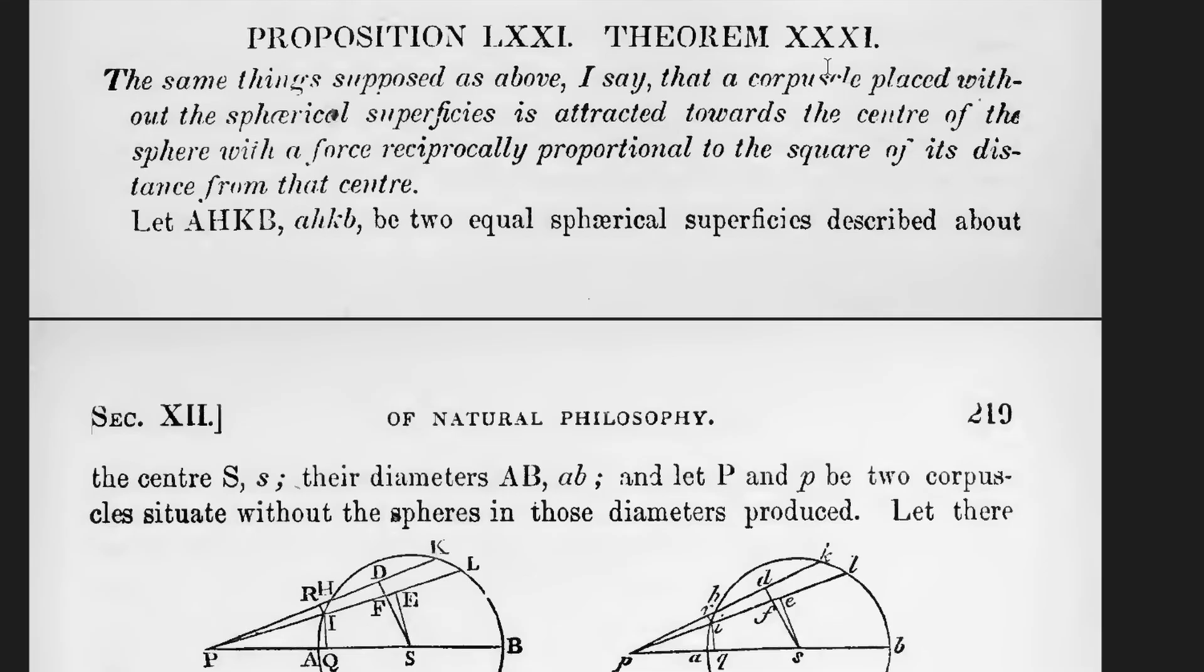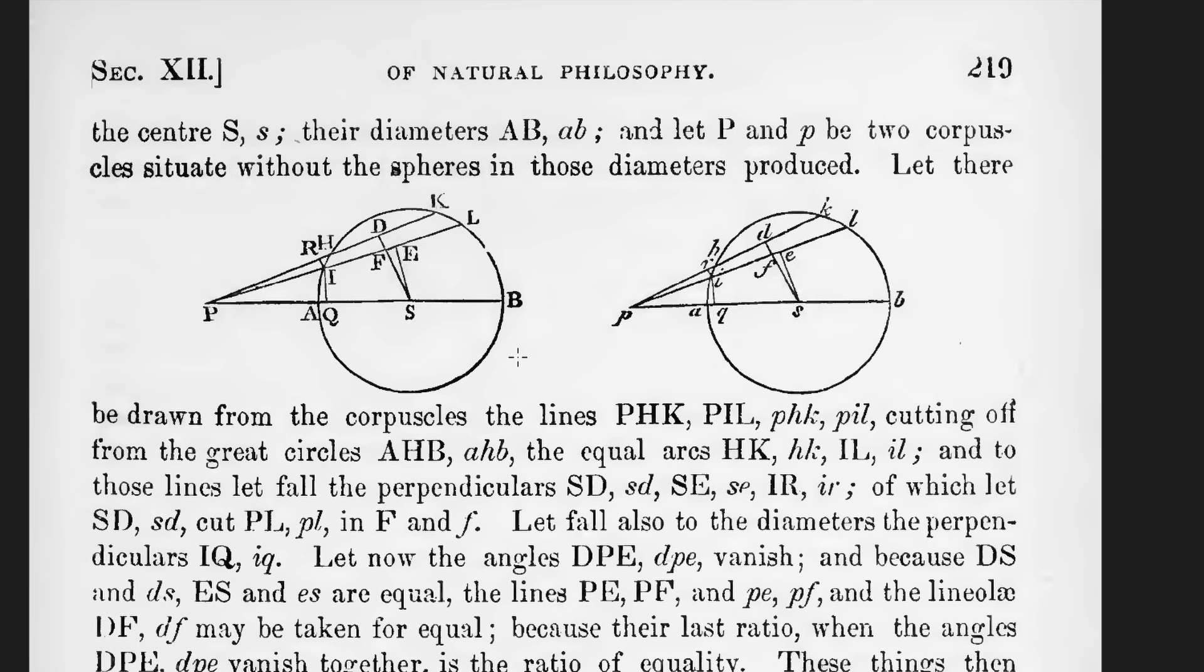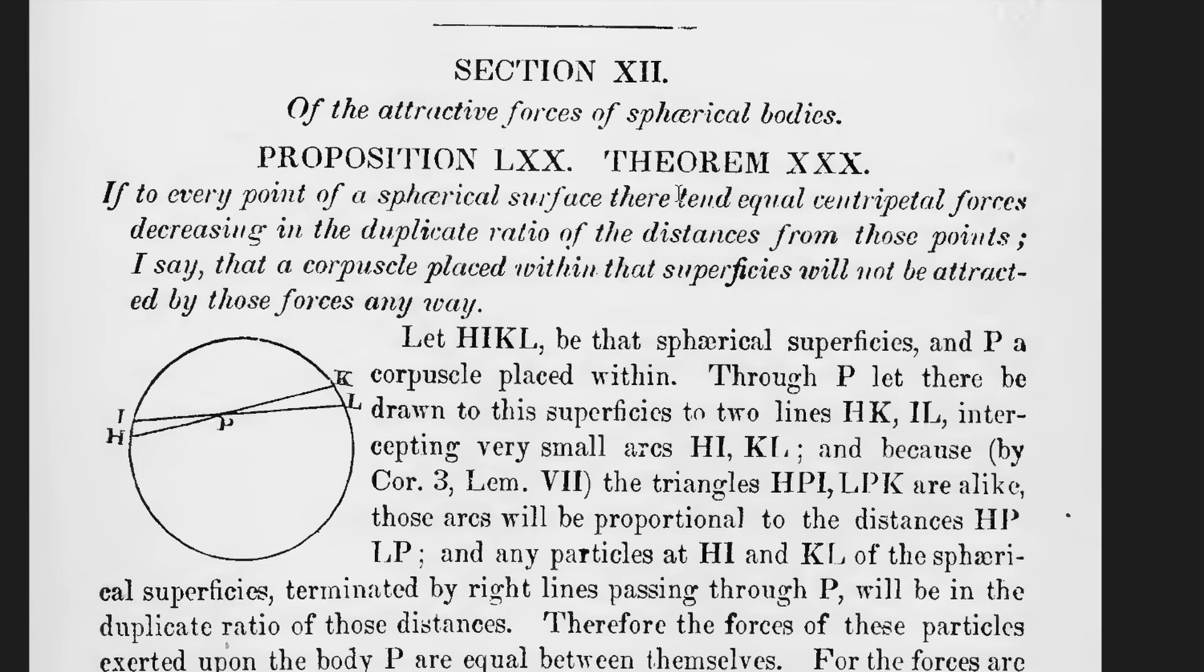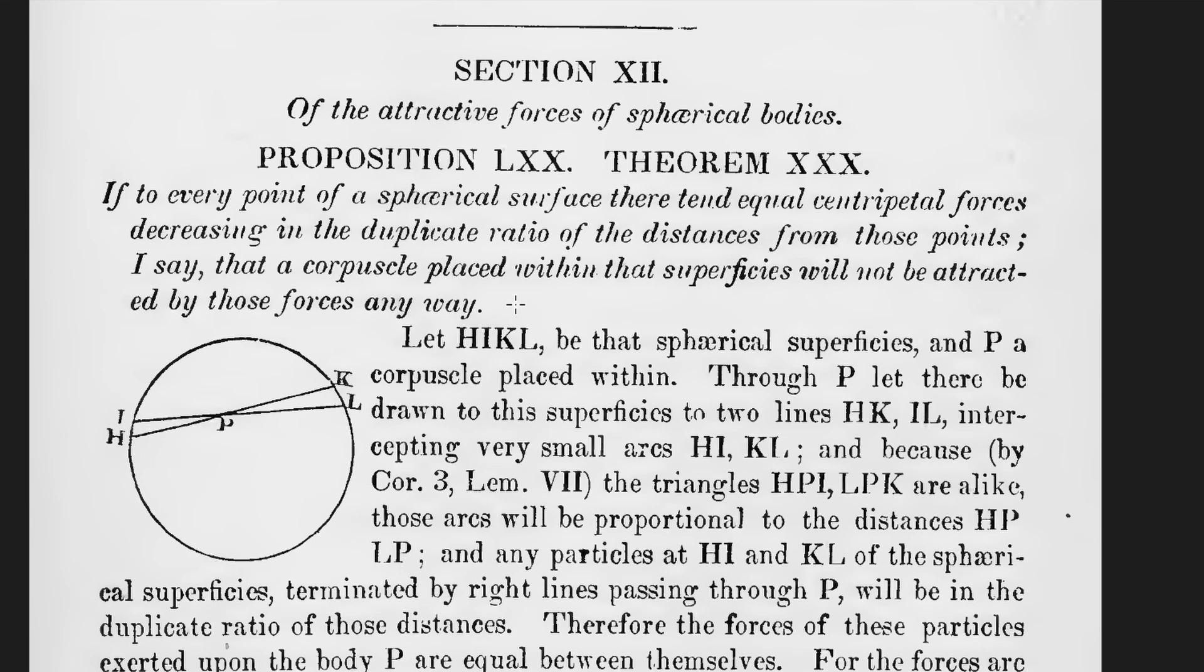The result we just stated is a paraphrase of theorem 31, and Newton's original proof is highly geometrical and verbal. The other part of the Shell theorem is theorem 30 in the Principia, which we shall not discuss today.